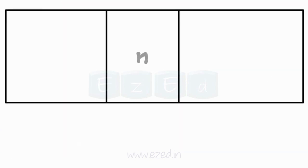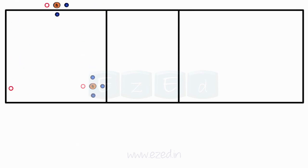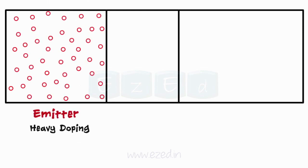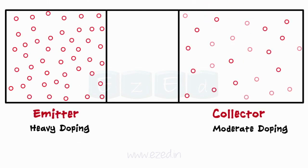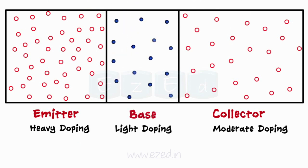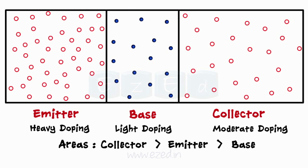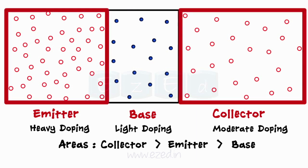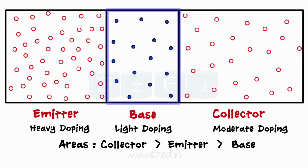When we sandwich an N-type semiconductor between two P-type semiconductors, we get a PNP transistor. The doping concentration in PNP also remains the same, with the emitter being heavily doped, the collector moderately doped, and the base very lightly doped. The areas of the three regions are kept unequal. In PNP, the emitter and collector contain free holes whereas the base contains free electrons as majority charge carriers.